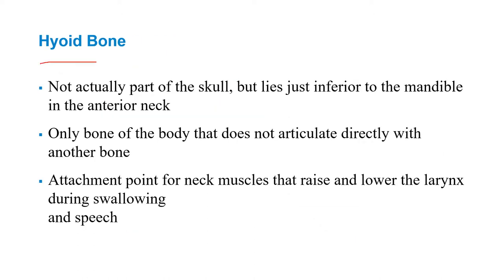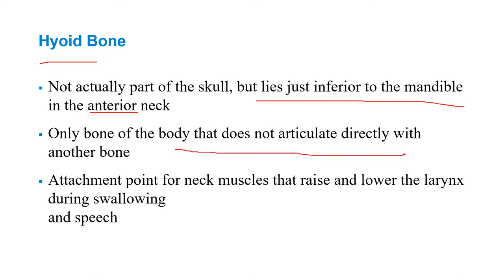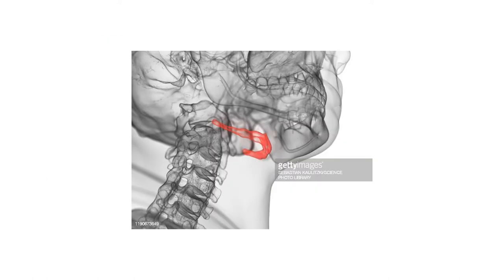The hyoid bone is not actually part of the skull, but lies just inferior to the mandible in the anterior neck. It's the only bone of the body that does not articulate directly with another bone. It serves as an attachment point for neck muscles that raise and lower the larynx during swallowing.